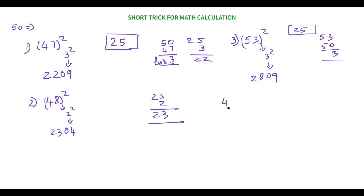Now try 56 square with me. It is 6 more than 50, so six square is 36. Add 6 to 25 to get 31. Our answer is 3136. These are the three to four tricks I've taught you — now take random numbers and find their squares. Try to solve more random numbers before the exam so you get the hang of it and can calculate very fast. Thank you for watching till the end.